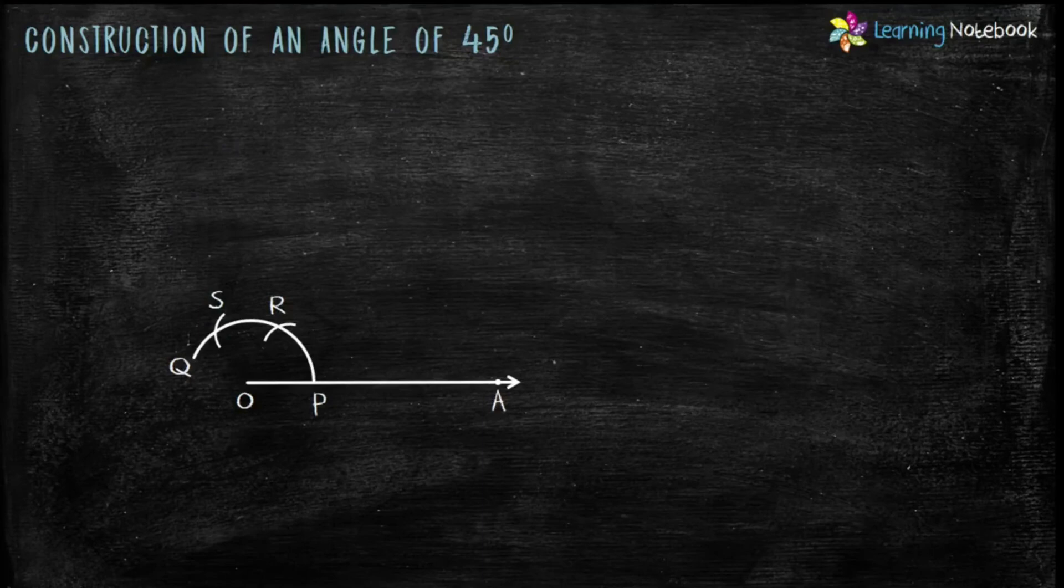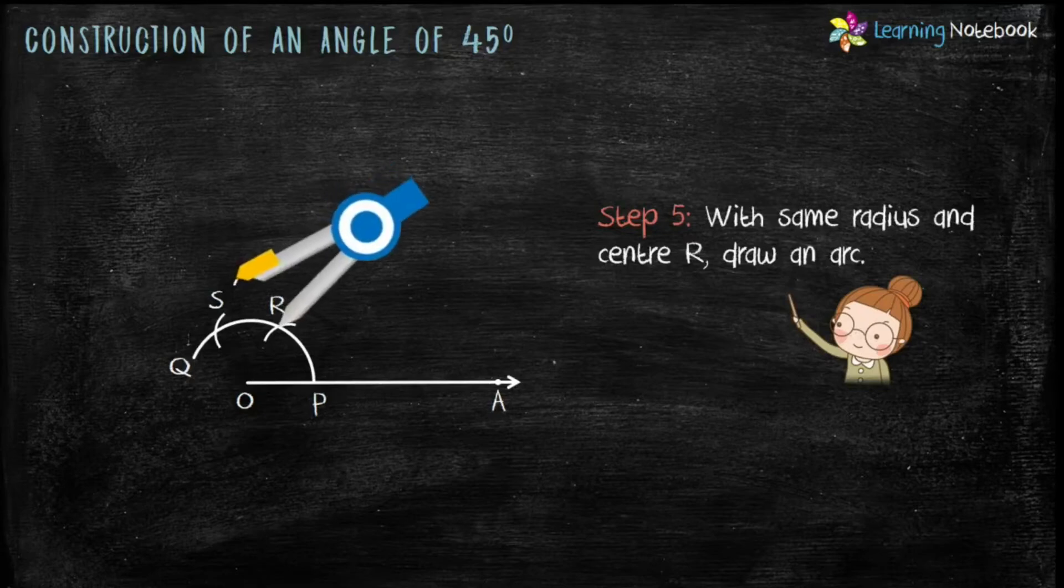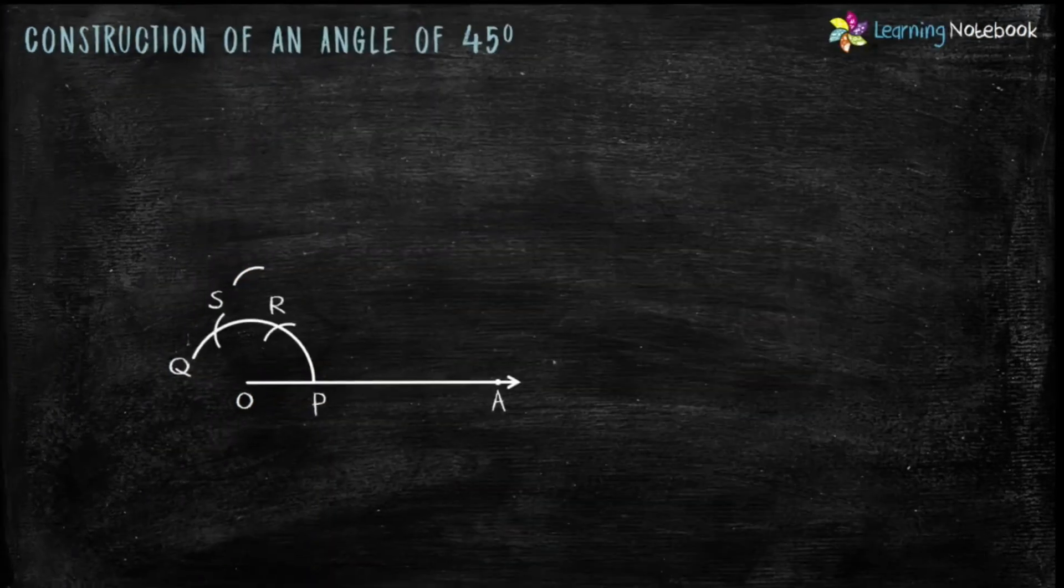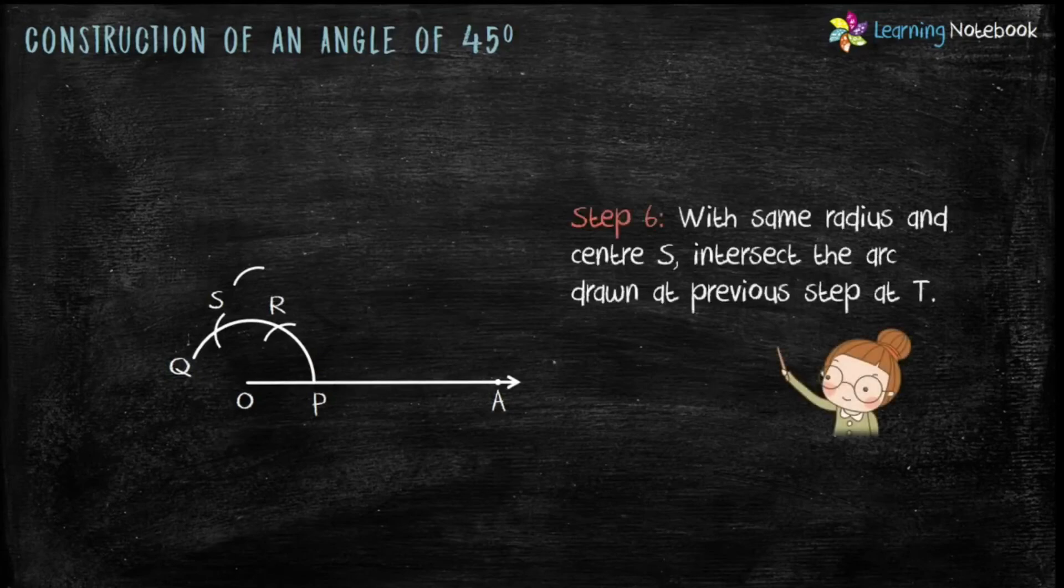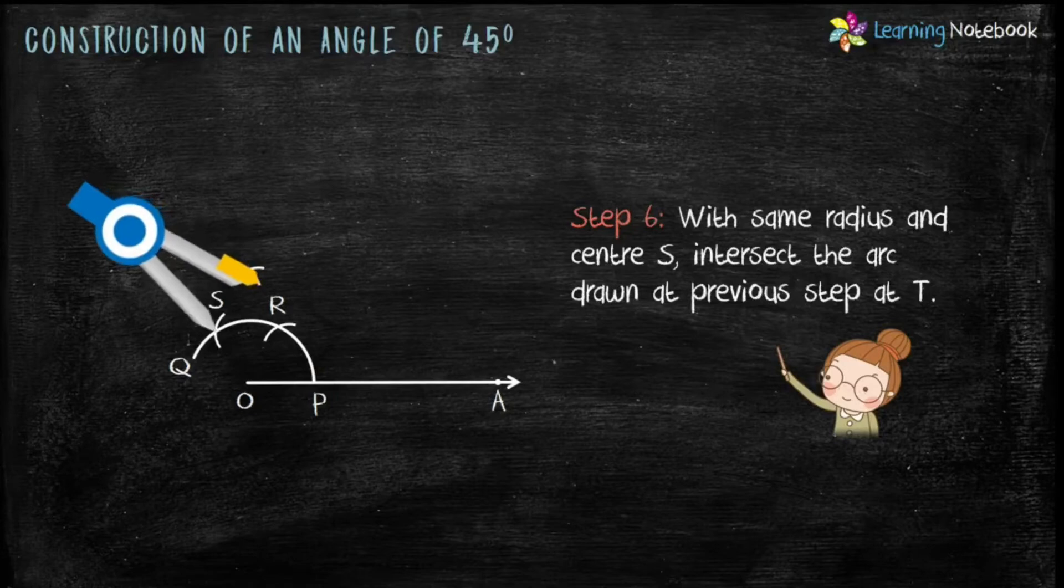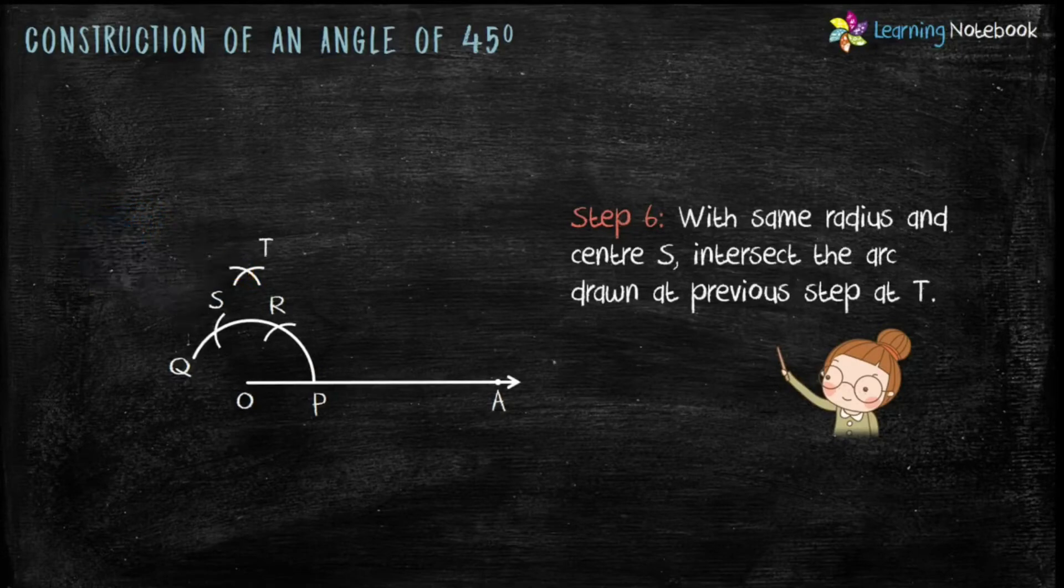In step 5, with same radius and center R, draw an arc as shown here. Now, next, keep the radius same and center S, intersect the arc drawn at previous step at point T.